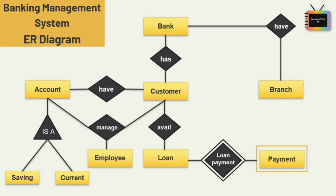The primary key of the loan along with the partial key would be used to identify the records. Weak entities are represented with a double rectangular box in the ER diagram, and the identifying relationships are represented with a double diamond. Partial key attributes are represented with dotted underlines.